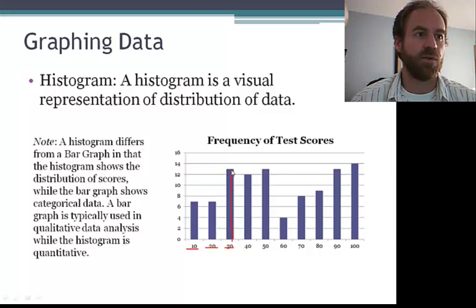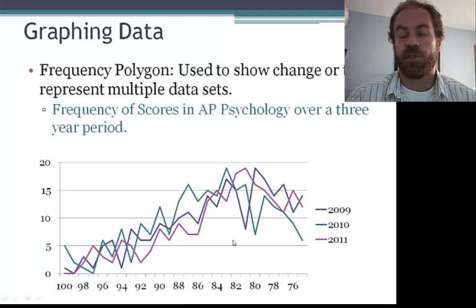And we can see how many scores there were within that set. So here we have about 13 scores, somewhere between 21 and 30. Another common use of the histogram is in displaying standard deviation. And we'll look at that shortly.